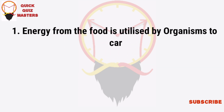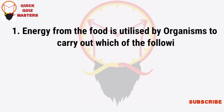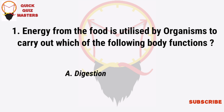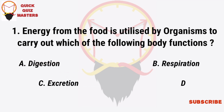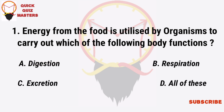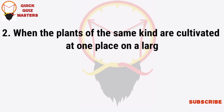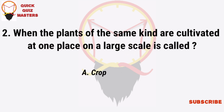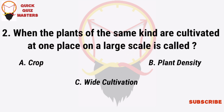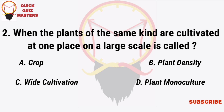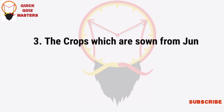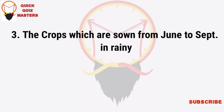Energy from food is utilized by organisms to carry out which of the following body functions? Digestion, respiration, excretion — all of these. When plants of the same kind are cultivated at one place on a large scale, it is called crop plant density, white cultivation, or plant monoculture.